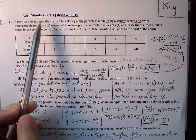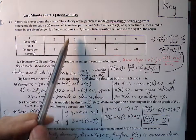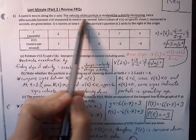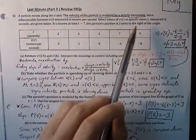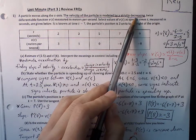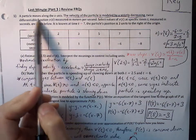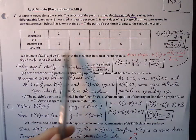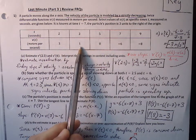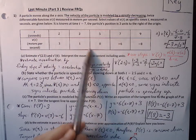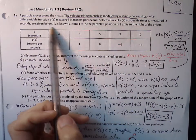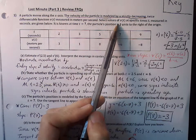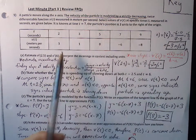This is a last-minute AP review part 3. Let's look at number 1. A particle moves along the x-axis. The velocity of the particle is modeled by a strictly decreasing, twice differentiable function — so it's a smooth curve that's at least degree 2 or higher. The velocity is always decreasing, so all values keep decreasing from 3 to 1, and everything in between is also decreasing. Meters per second is our unit of measure for velocity. Select values of v of t at specific times are given.